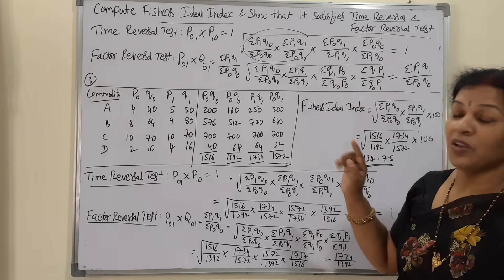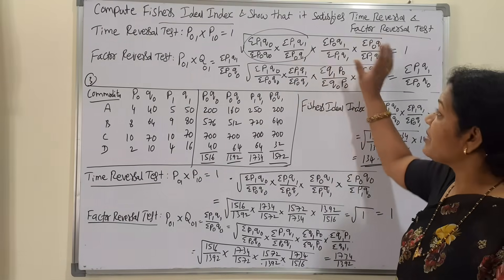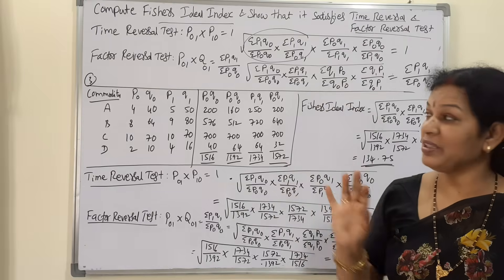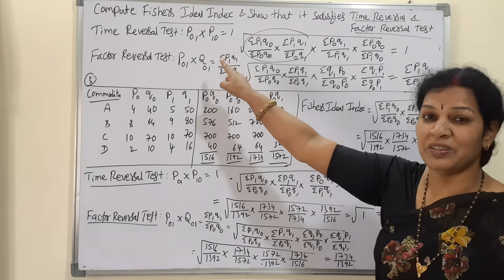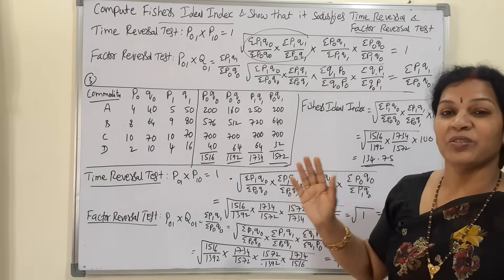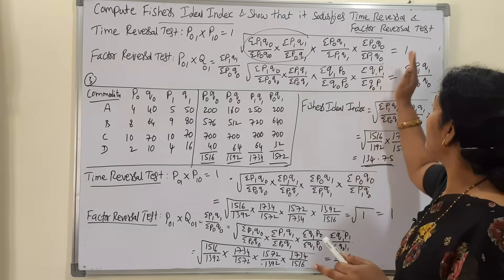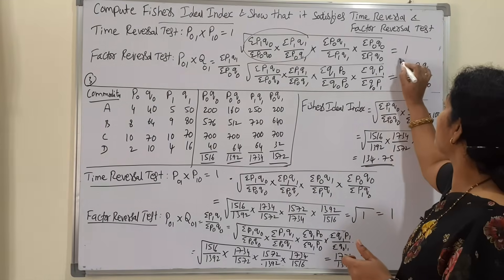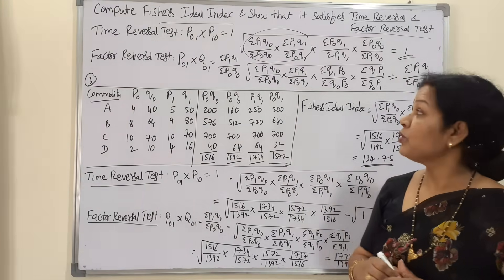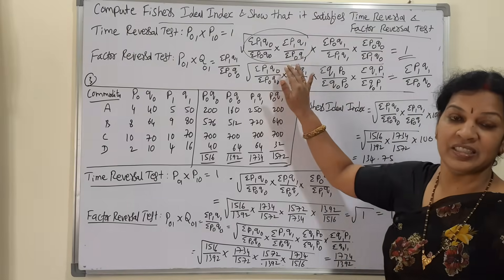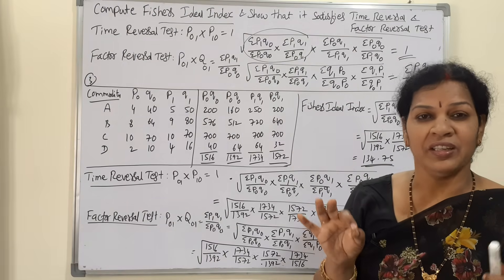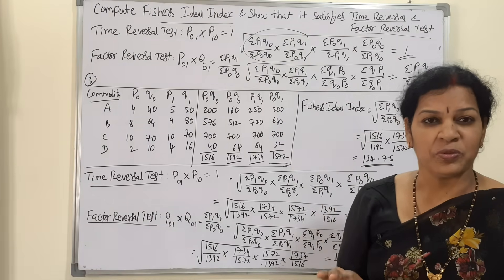So we have just reversed the Fischer's ideal index number. That is why P01 multiplied by P10 (the reverse) must equal 1. After calculation of all this, if the answer is 1, then we can say it is satisfying the time reversal test.